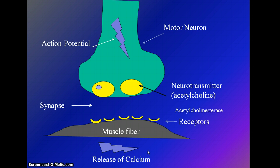Then — you should remember — we need to break down the molecule ATP. By breaking down that molecule of ATP, it allows the myosin crossbridge to ratchet. Then it's going to use another ATP, and the myosin is going to let go.